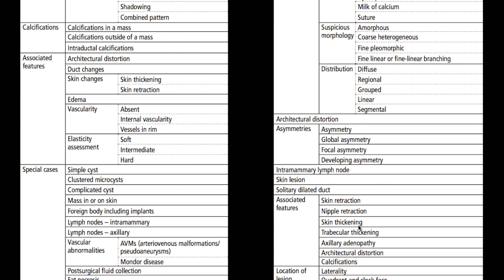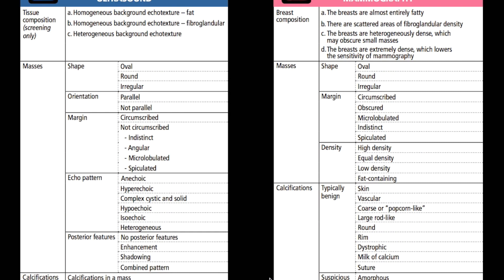Moving on to ultrasound, we have similar but also different keywords. Tissue composition is described as homogeneous background consistent with fat, homogeneous fibroglandular background, or heterogeneous background. If we have a mass, we describe it based on shape, and orientation — whether parallel or not parallel — is important. This is why it was previously described as 'taller than wide.' We also describe the margin, particularly whether it's circumscribed or not circumscribed.